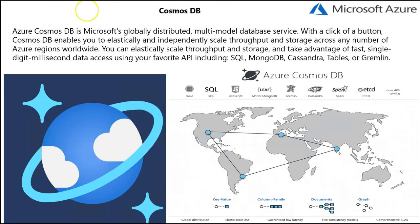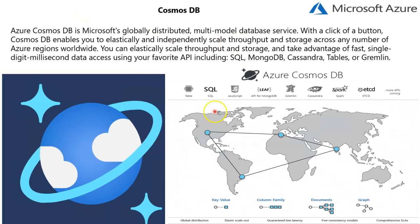Hello and welcome back. In this lecture, we will be learning about Cosmos DB. Azure Cosmos Database is a globally distributed multi-model database as a service for any scaling. The service was built from the ground up with global distribution and horizontal scale at its core functionality.